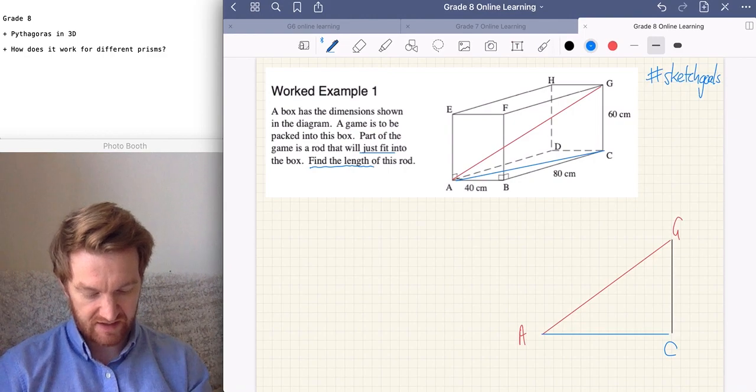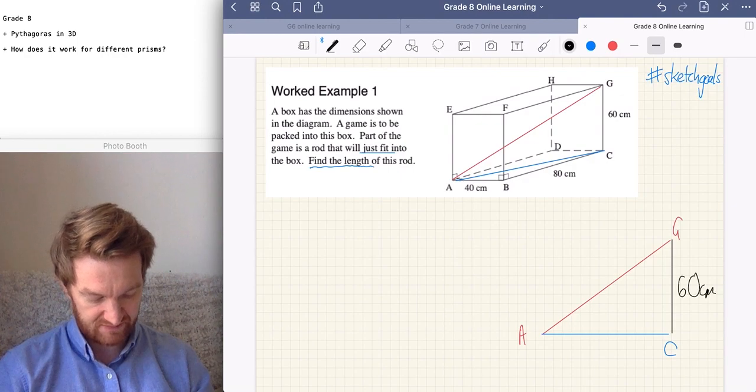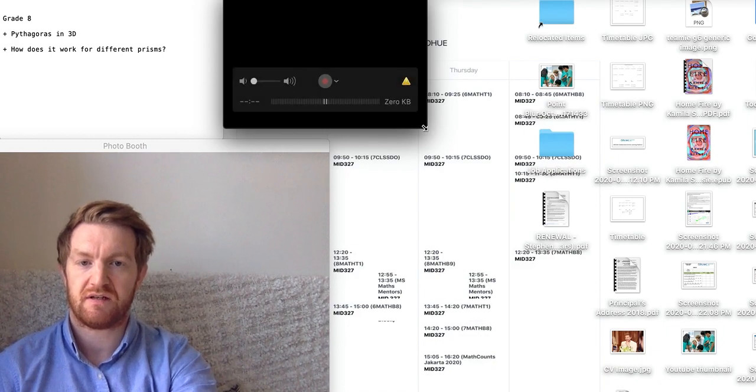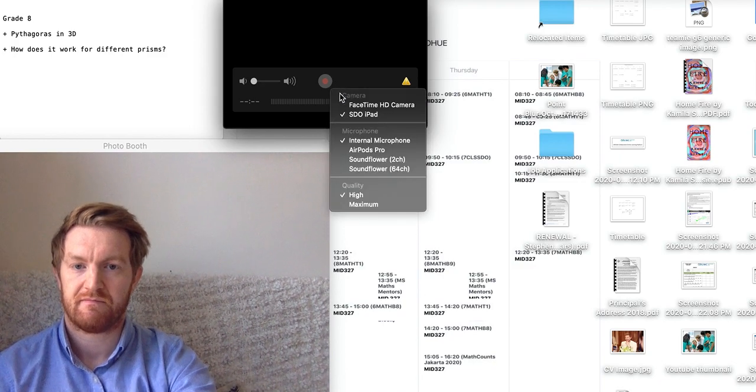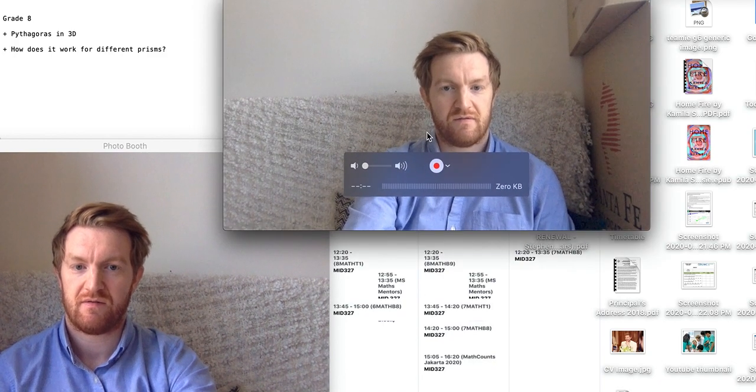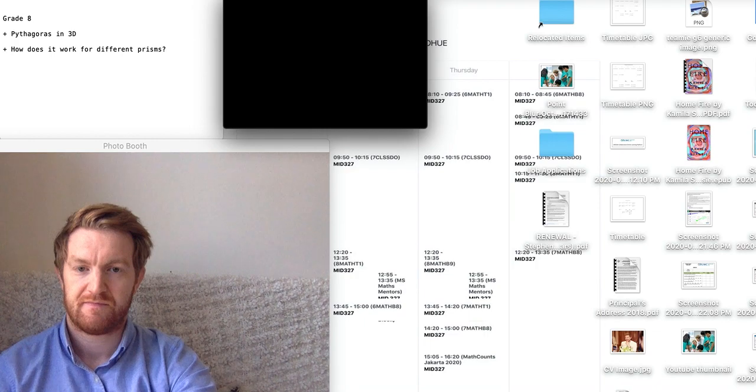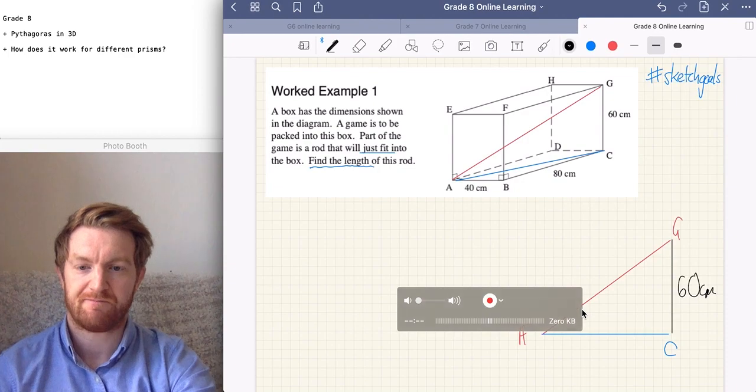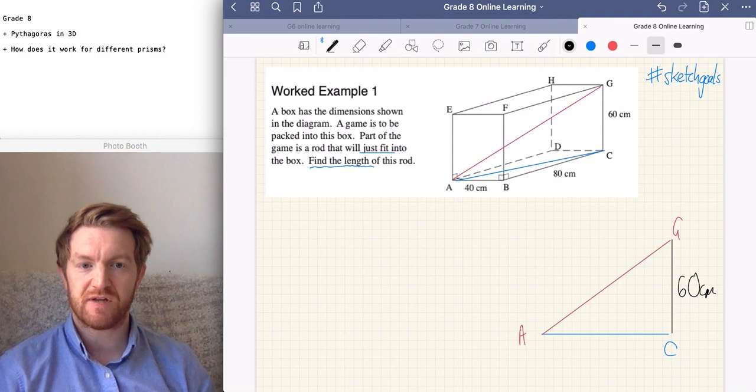And we can label on any information onto here that we already know. And we can see that the line going from G to C is 60 centimeters long. So we can label this side here 60 centimeters. But we don't know what the red one is. That's what the question's asking. And we don't know what the blue one is. We don't know what the red one is. So we're going to have to, first of all, find that blue line.